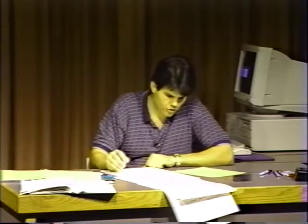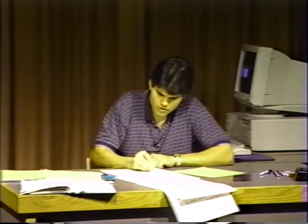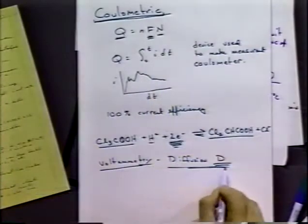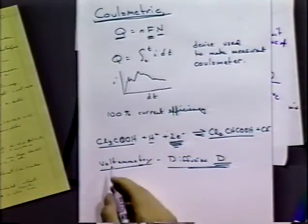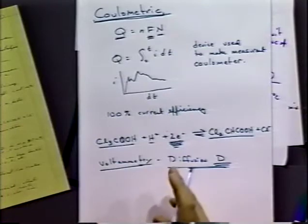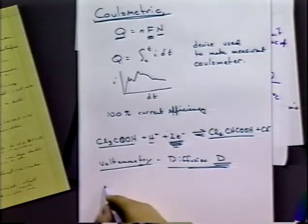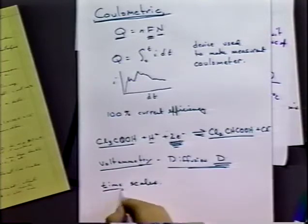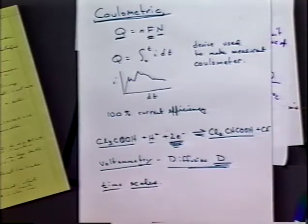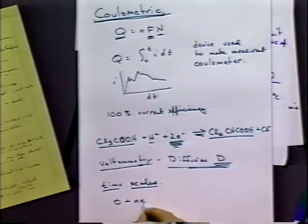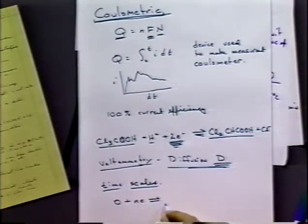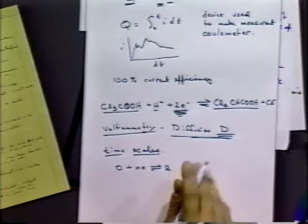One problem with coulometry and voltammetry is that they often occur at vastly different timescales. While we want to use coulometry to determine n and voltammetry to determine D, situations can occur where you have an electron going in to reduce something, but R undergoes some follow-up chemical reaction.